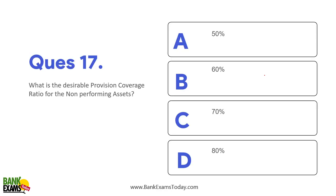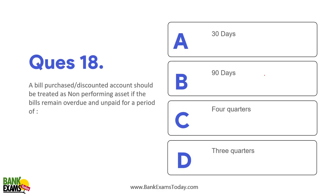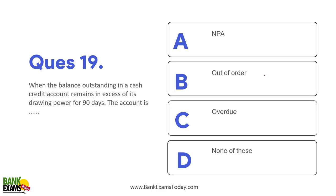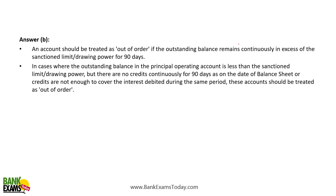The desirable provision coverage ratio for NPA is 70%. A bill purchased or discounted account should be treated as NPA if the bill remains overdue for 90 days. When the balance outstanding in a cash credit account remains in excess of its drawing power for 90 days, the account becomes out of order — because in cash credit and overdraft, the out-of-order concept applies, not NPA.